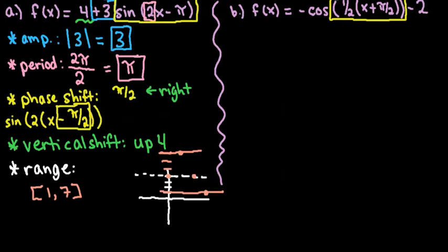As far as reflections go, either A or B has to be negative. Since my A term, my amplitude, is positive, there is no reflection over the x-axis. If my B term is negative, then we would reflect over the y-axis. So for this one, there is no reflection.